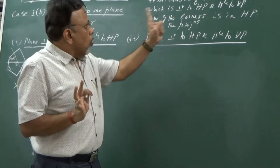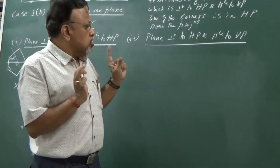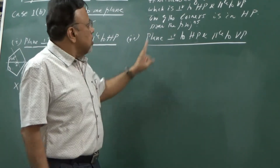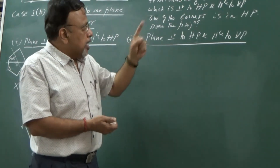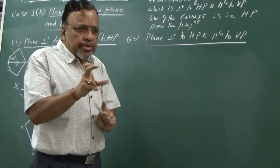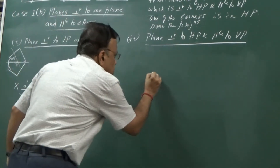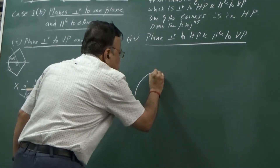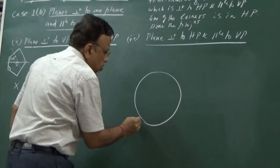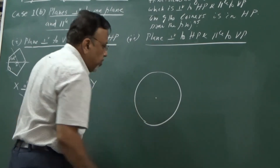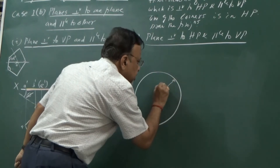Let me explain how to draw the hexagon by the circle method. I am going to give a very simple procedure. Since the side is 50 mm, first you take a 50 mm radius and draw a circle. That is the first step - draw a circle of 50 mm radius.